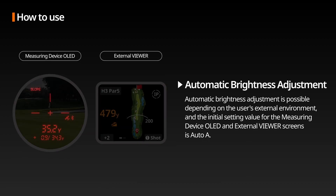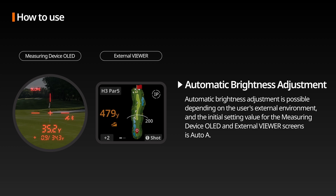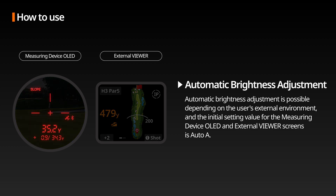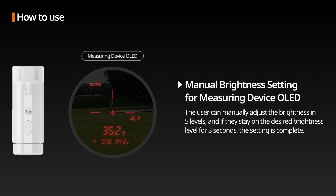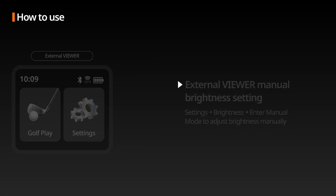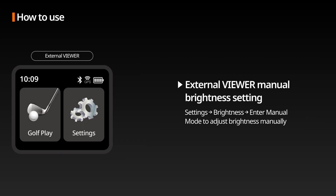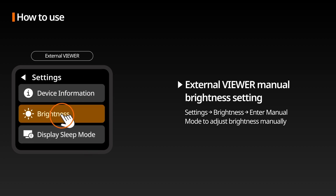Automatic Brightness Adjustment: The brightness of the measuring device OLED and external viewer is automatically adjusted according to the user's external environment, with initial settings set to auto. Manual Brightness Adjustment for measuring device OLED: Users can manually adjust the brightness by holding down the power measurement button and pressing the mode button. Pause for 3 seconds at the desired brightness level to complete the setting. For the external viewer, enter settings on the main screen to manually adjust brightness.